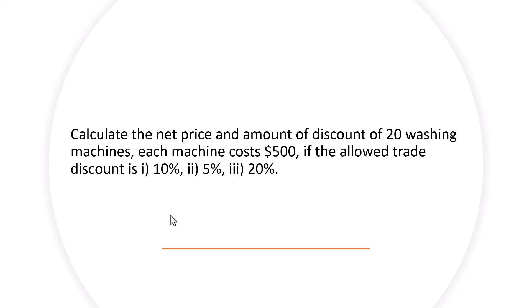Today we're going to work on a lesson, a problem on trade discounts. Imagine a manufacturer is offering a wholesaler a trade discount on washing machines. There are 20 washing machines that they're selling to the wholesaler, each costing $500. What is the net price and amount of discount if there are different trade discounts?